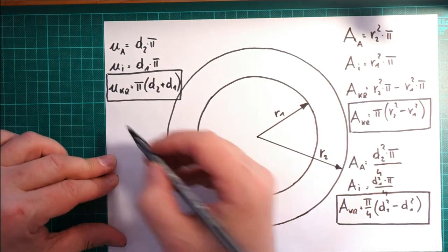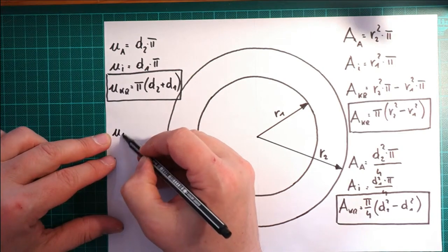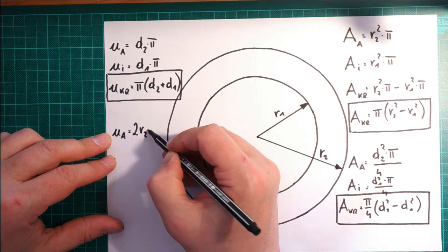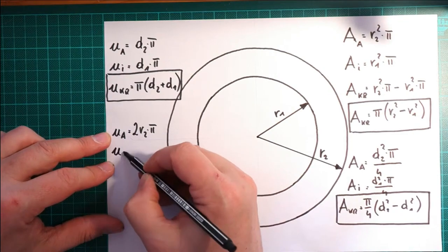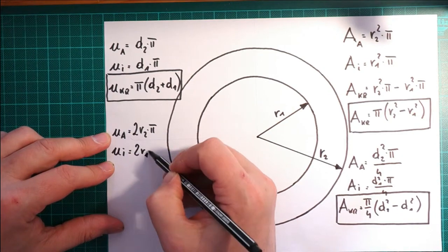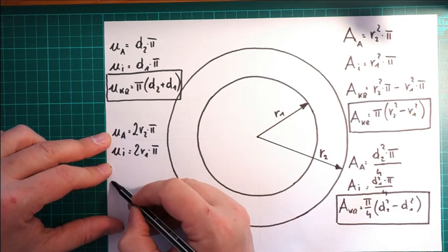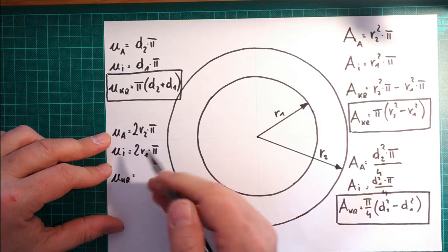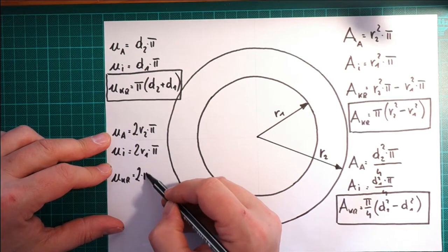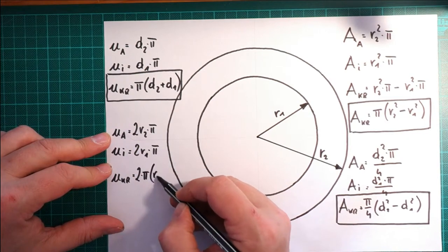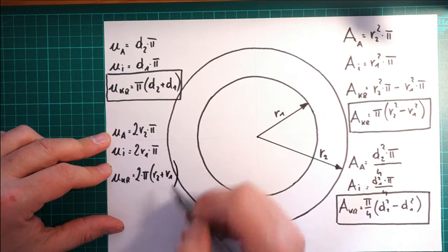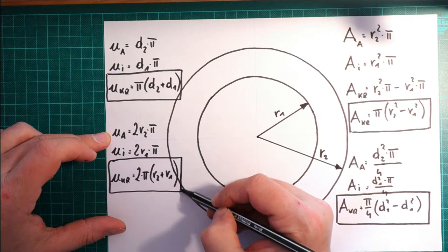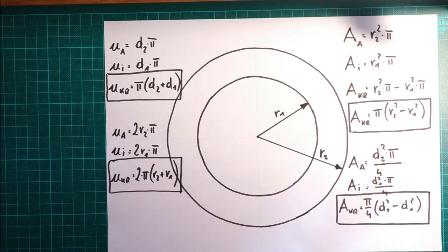Was ist, wenn ich nun Radius gegeben habe? Naja, was wird da viel sein? 2R2 mal Pi, 2R1 mal Pi. Und wenn ich die zusammenzähle, dann sehe ich schon, der 2 und das Pi ist zum herausheben. 2 mal Pi mal R2 plus R1. Und das war es auch schon.